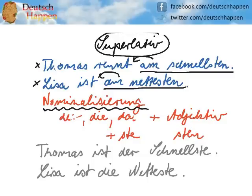In what I am going to show you now, the superlative describes the subject more closely or in more detail. Therefore you need, depending on the gender of the noun you want to describe, the normal articles — der, die, or das. You take your adjective and you add S-T-E at the end. Article plus adjective plus S-T-E.